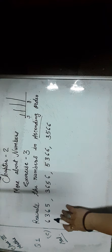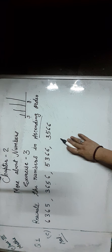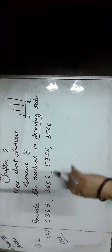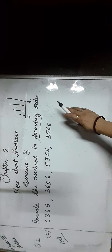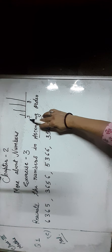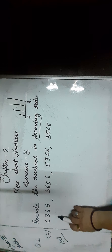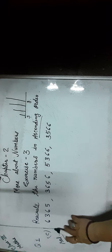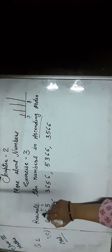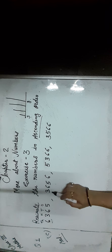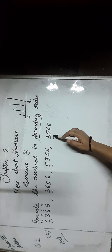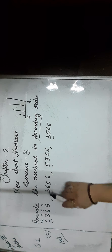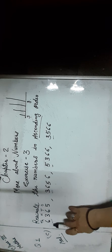Now first we check the number of digits — as you can see all numbers have 4 digits. Ascending means going up from smallest to greatest, so find out the smallest number. First we compare the 1000s place digit: here is 6, 3, 5, 3. As you can see, 3 is smaller than 6 and 5.